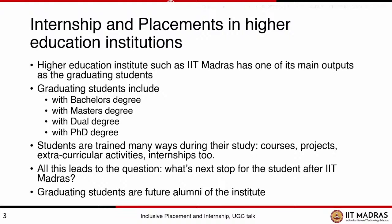As you know, the most important output that any education institute has is the human resources — the graduating students who pick up skills and come out with certain skill sets, which are hopefully useful in their life going forward. The graduating students are now more inclusive of all types of degrees. Predominantly a long time back, it used to be only a bachelor's degree, a lot of focus on B.Tech. Then came master's with M.Tech, and then master's became MS — master's by research. We had master's by coursework, which is M.Tech, and then we also have the MS program. Somewhere along the lines, dual degrees came as well.